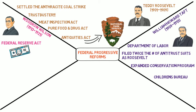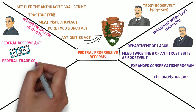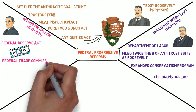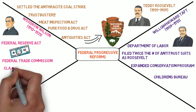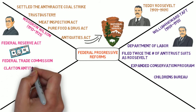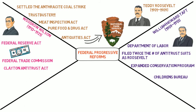In 1914, the Federal Trade Commission was established for the purpose of monitoring and preventing any illegal business activities. Also in 1914, Congress passed the Clayton Antitrust Act, which attempted to strengthen the federal government's existing antitrust laws. Unlike the Sherman Antitrust Act, this one could not be used to weaken labor unions.